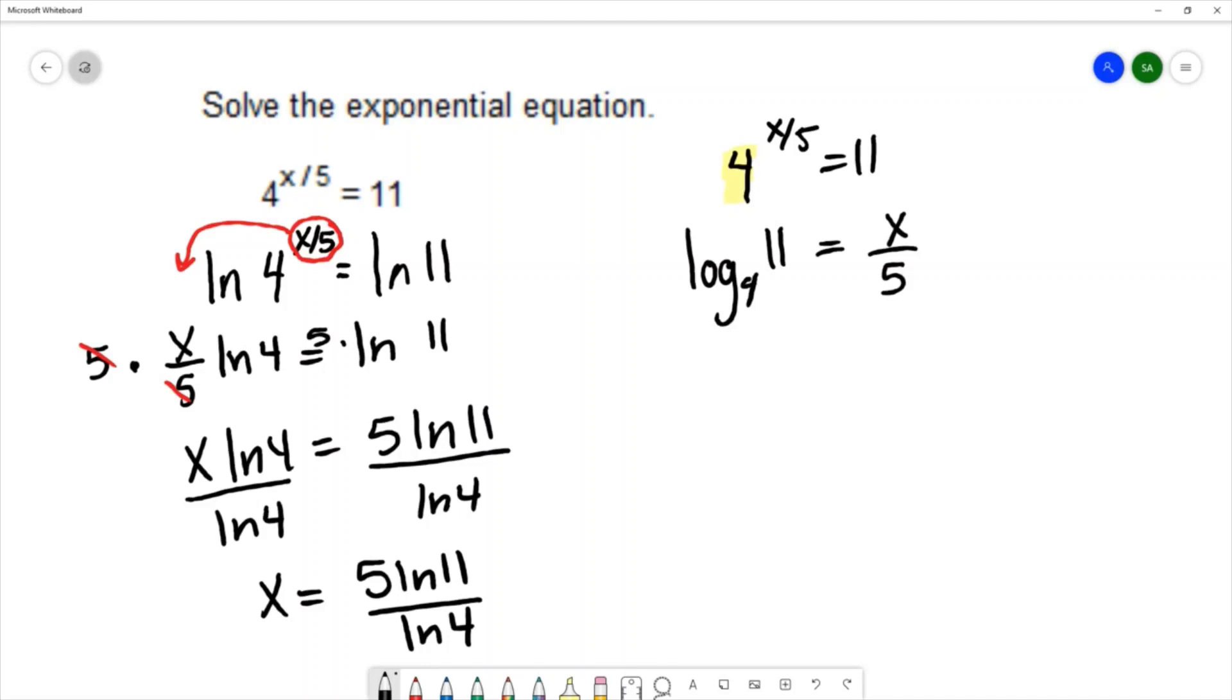Now, we want to get x by itself, so we multiply by 5 on both sides. And I have x equals 5 log base 4 of 11. And this gives me my solution.